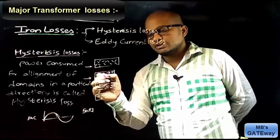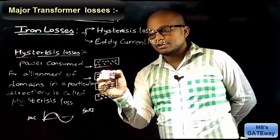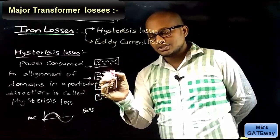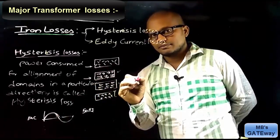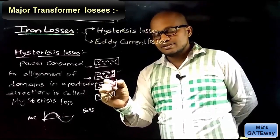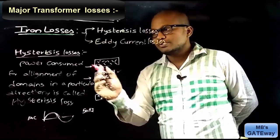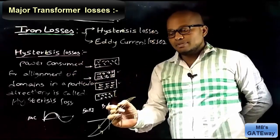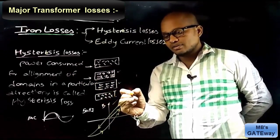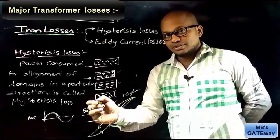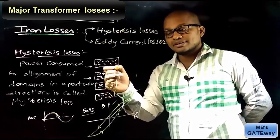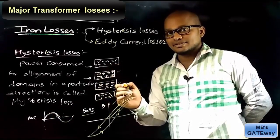For every cycle there is one positive half cycle and one negative half cycle. For the positive half cycle, the domains in the transformer core align in one direction, and for the negative half cycle the domain direction must be reversed. For these reversals they require some power, which is called hysteresis loss. This is shown in the BH characteristics drawn for one cycle of the input.